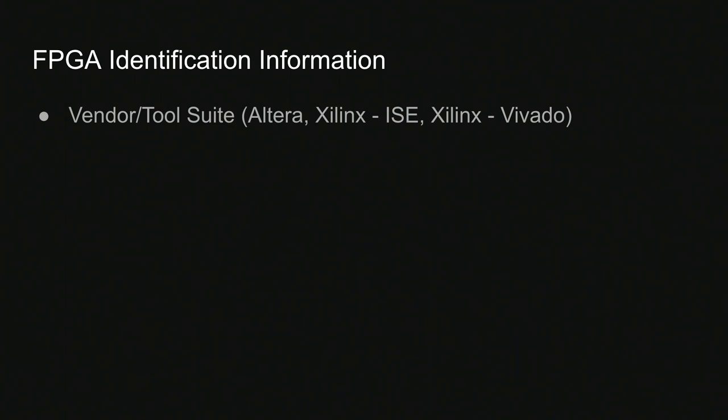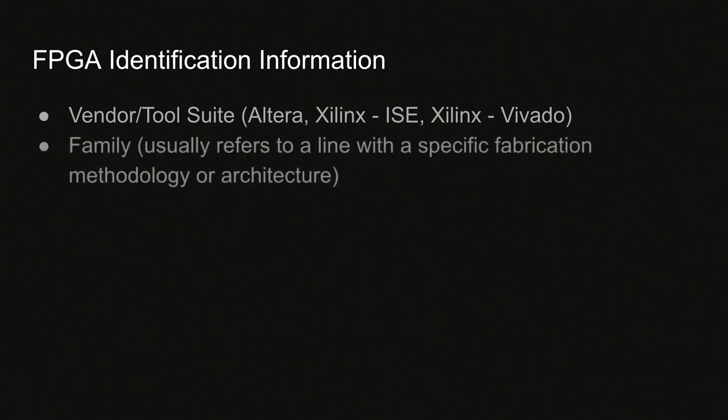What they really mean when they say Xilinx is they mean ISE. So if you have, for example, the Spartan 6 line of chips, you would select Xilinx for a board based on that chipset. The next thing it asks for is a family, which usually refers to a line of chips using a specific fab methodology or some unique architecture. Strictly, I do not believe family is actually required information to synthesize a design, but the tool does ask for it.